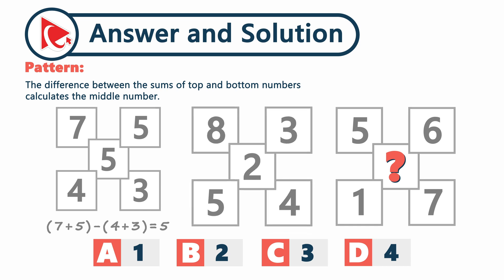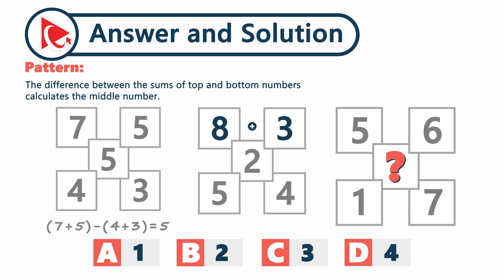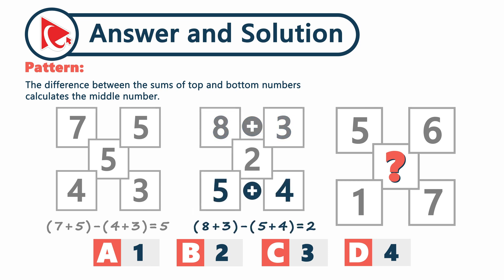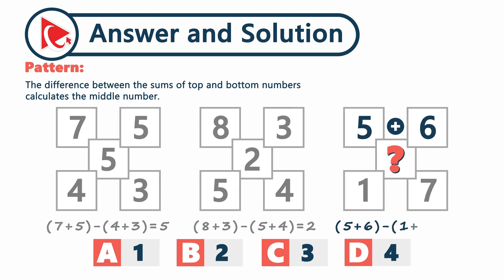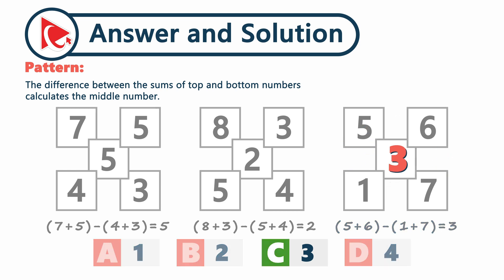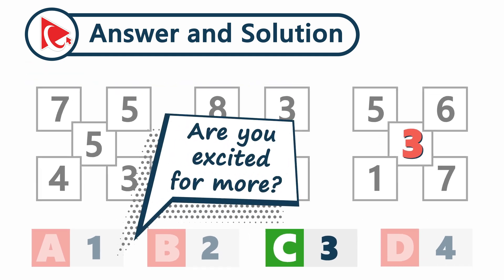Let's verify our hypothesis with the second shape: (eight plus three) minus (five plus four) equals two — exactly the number in the middle. Now it's time to calculate the missing number: (five plus six) minus (one plus seven) equals eleven minus eight, which equals three. So the correct answer is choice C — three.